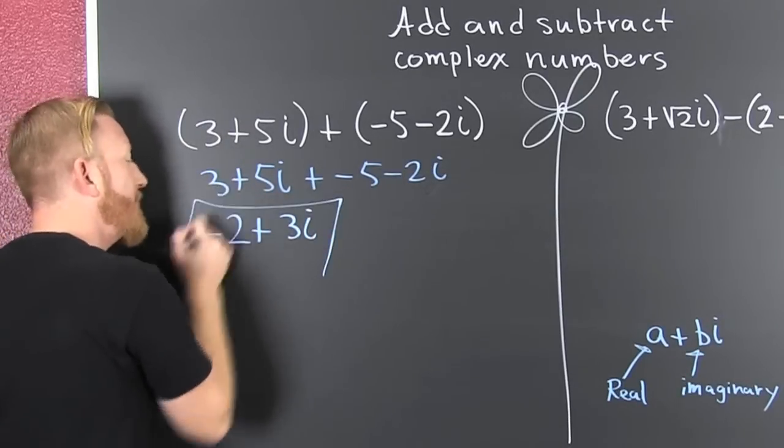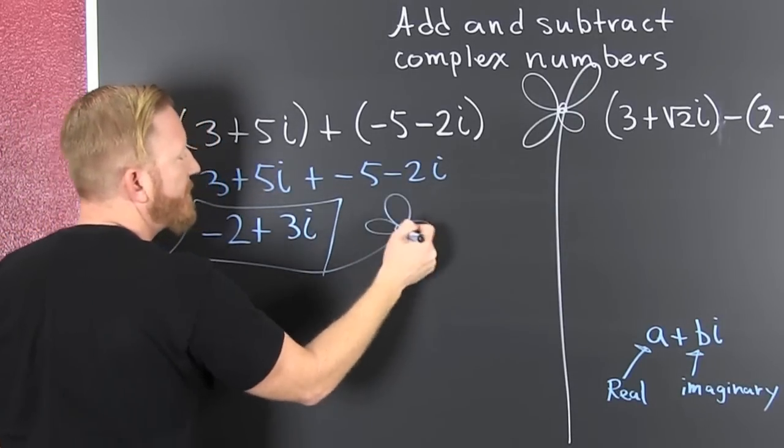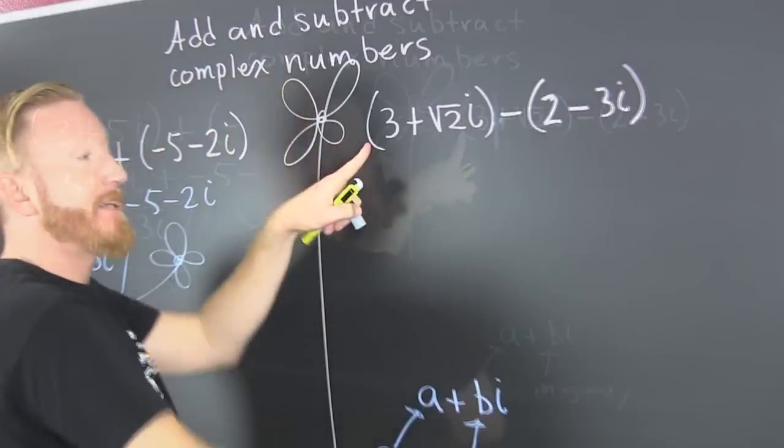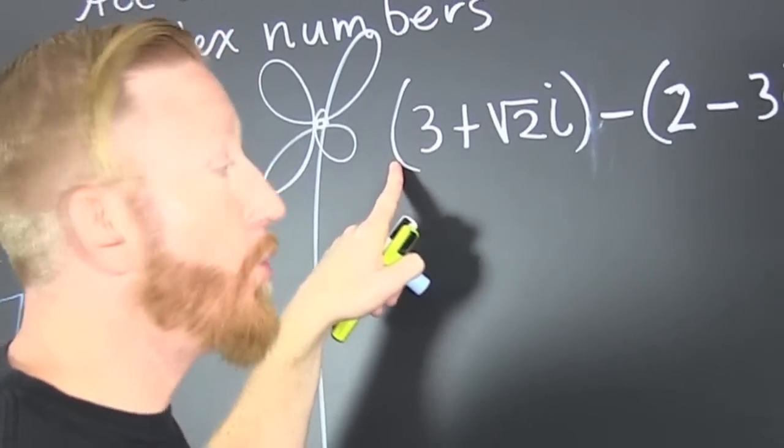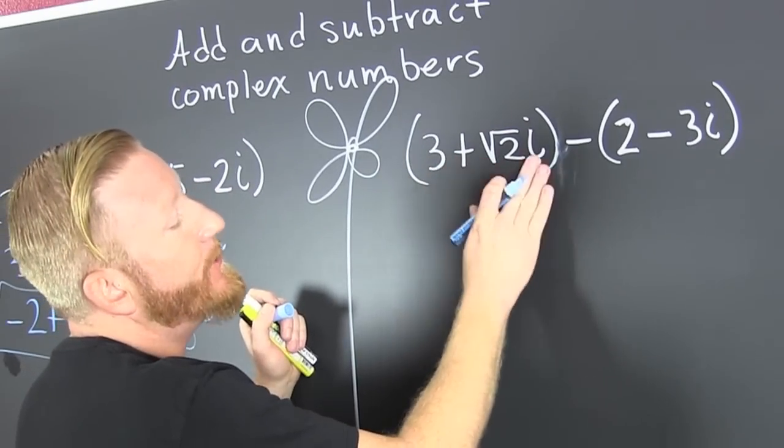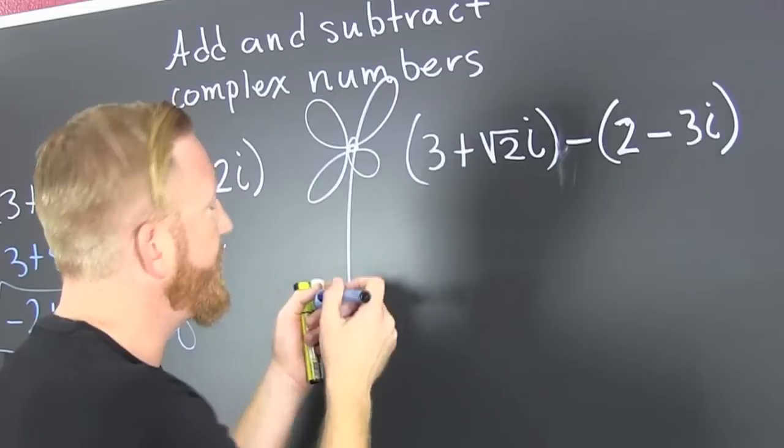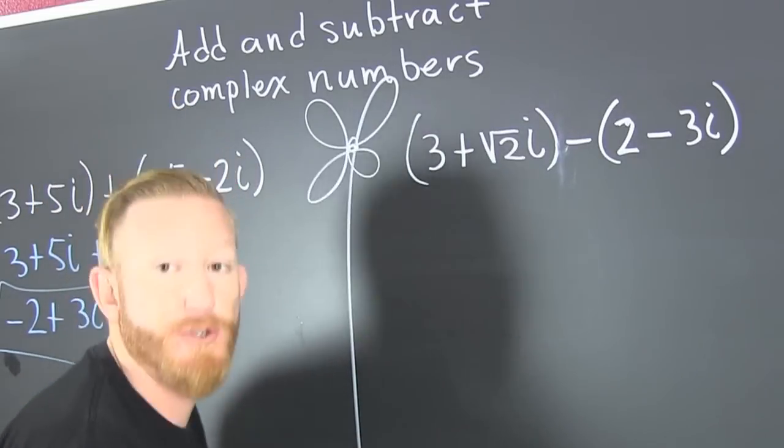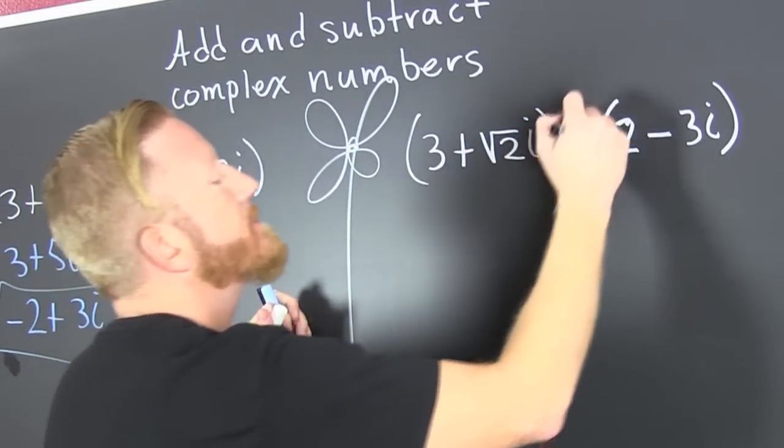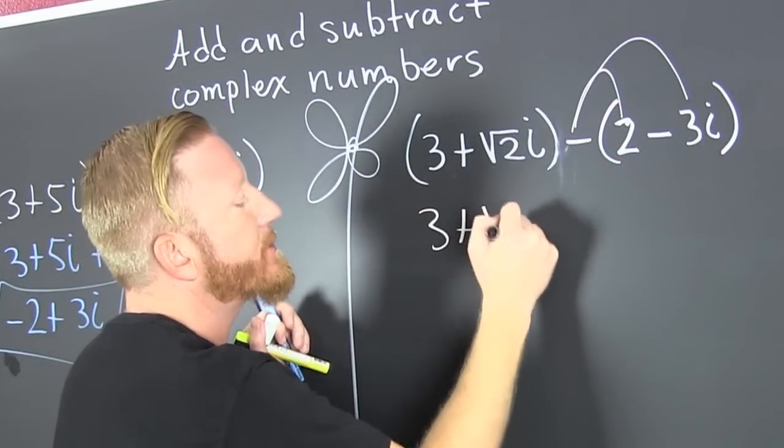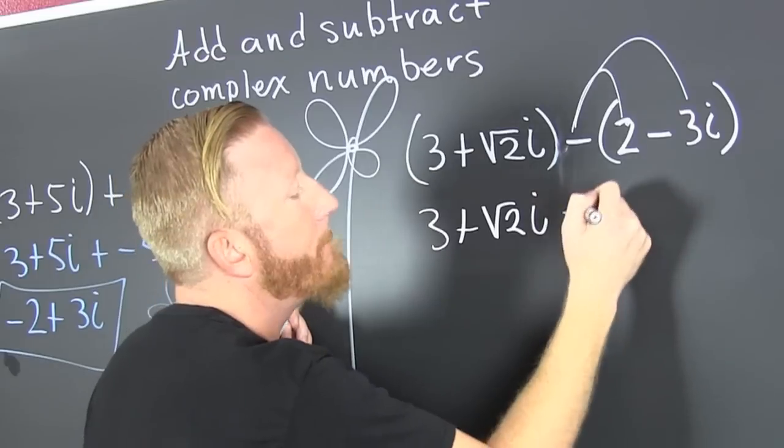Next this guy, three plus root two i minus two minus three i. Now we're gonna subtract these complex numbers. That's three plus root two i minus two plus three i.